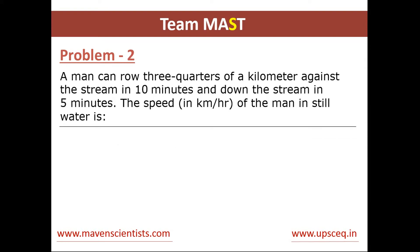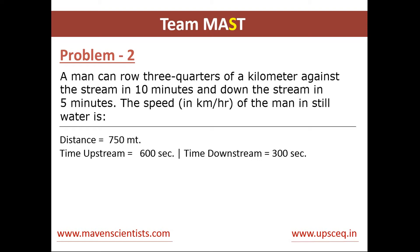Let us see the next question. In this problem, a man can row three-quarters of a kilometer, so the distance is 750 meters. He rows against the stream in 10 minutes and down the stream in 5 minutes. We need to calculate his speed in kilometers per hour in still water. This question is a bit tricky because the values are in meters and minutes but the answer must be in kilometers per hour. The time upstream and downstream are 600 seconds and 300 seconds respectively.